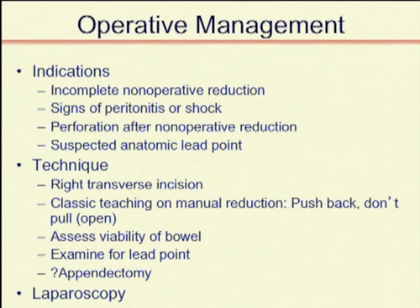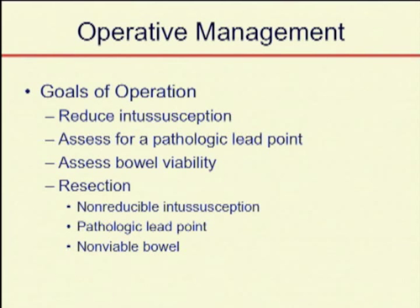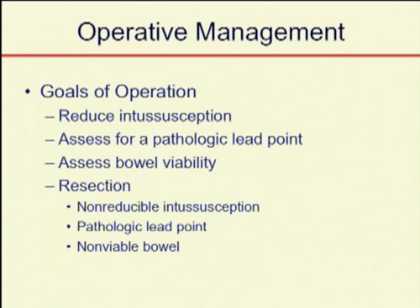The goals of the operation are simply to reduce it and restore blood flow. You're going to assess for a pathologic lead point and assess for bowel viability. There is almost certainly some ischemic process ongoing. Even when you resect and put your two ends together thinking you have healthy ends, you have to be aware of an increased risk of anastomotic complications. If you have non-viable bowel, a pathologic lead point, or find the bowel to be at all questionable, resection is certainly the right answer.